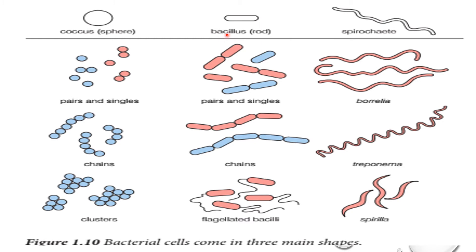Bacteria can be arranged as singles, pairs, or chains. Bacilli (rod-shaped bacteria) can be single, in pairs, or in chains, and some are flagellated. Spirochetes have a spiral corkscrew shape. These are some examples of bacteria that exist in different shapes and arrangements.